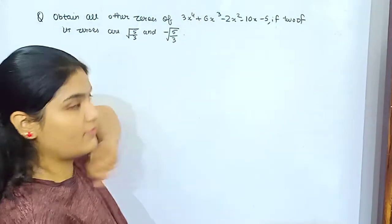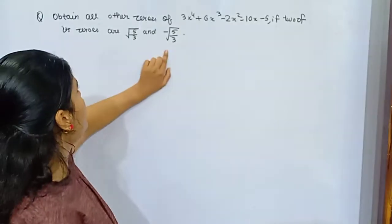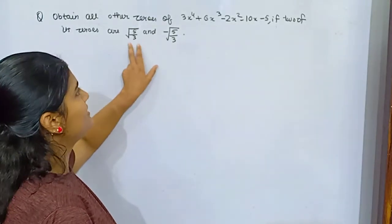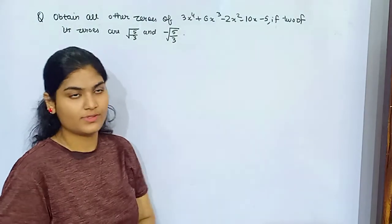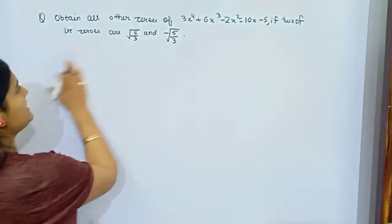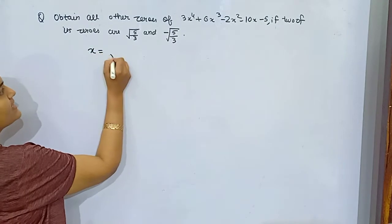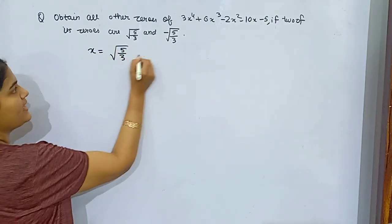Let's begin. You can see the question has given you a bi-quadratic equation having degree four. You already have these two zeros, so you need to find out two more zeros. So how can you do that? You know this x = √5/3 and x = -√5/3 are your zeros given to you.